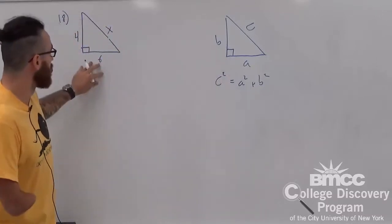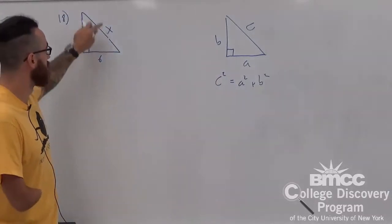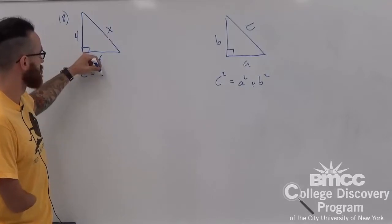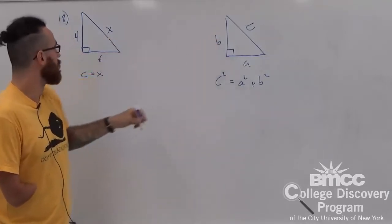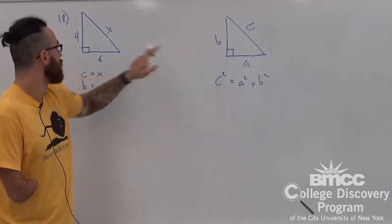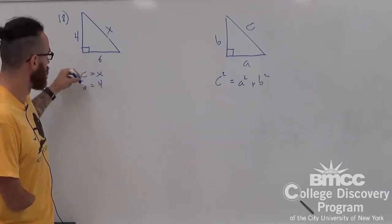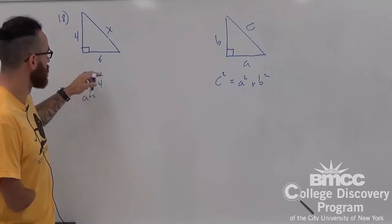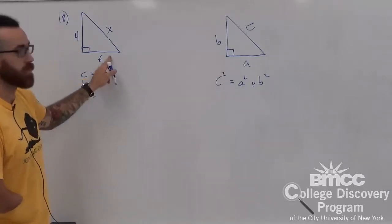Now, if we apply it to our triangle here, c is equal to x, then b equal to 4, and a equal to 6.